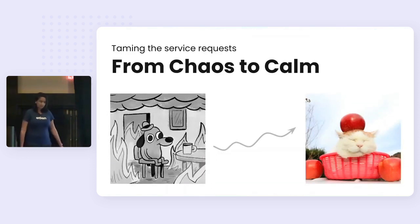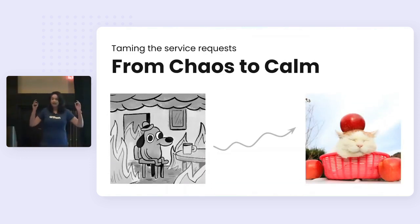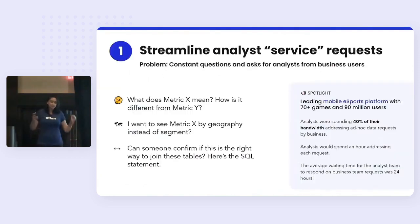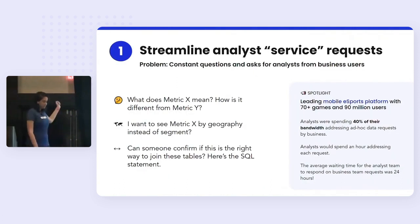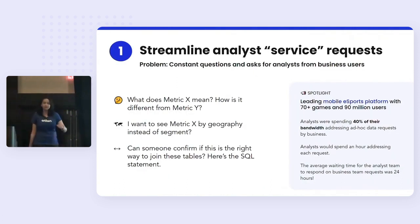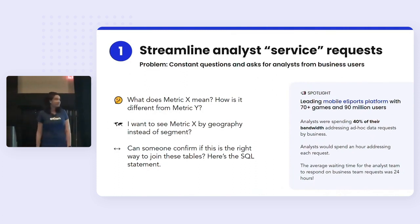Taming the service requests from chaos to calm. The core challenge that data teams have is we deal with service requests all the time. Let's take analyst service requests: what does this metric mean? How is it different from metric Y? I want to see metric X by geography instead of segment. Can someone confirm if this is the right way to join these tables?